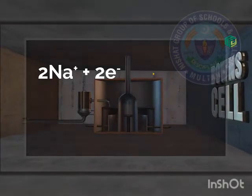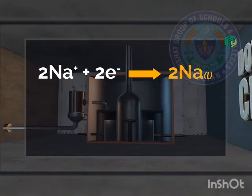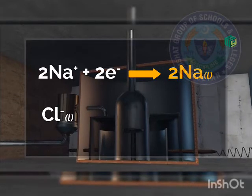To cathode par kaun sa process hota hai? Reduction, that is gain of electrons. Sodium ions electrons gain karte hain aur banate hain sodium metal jo ki liquid state mein exist karta hai bahut high temperature par.